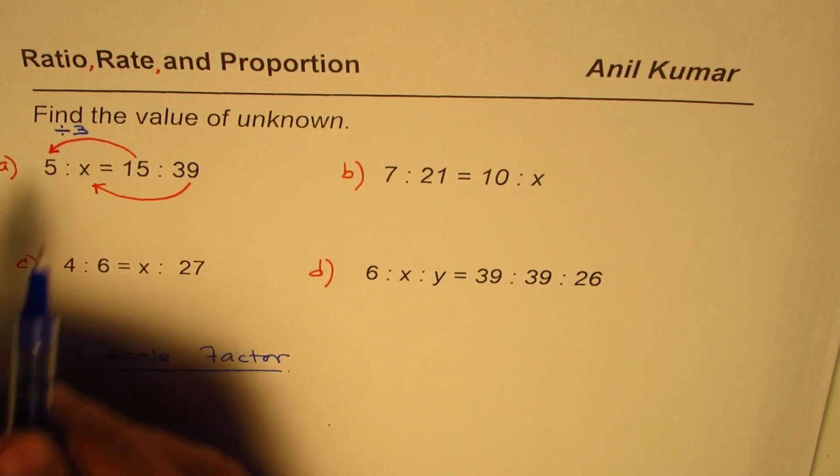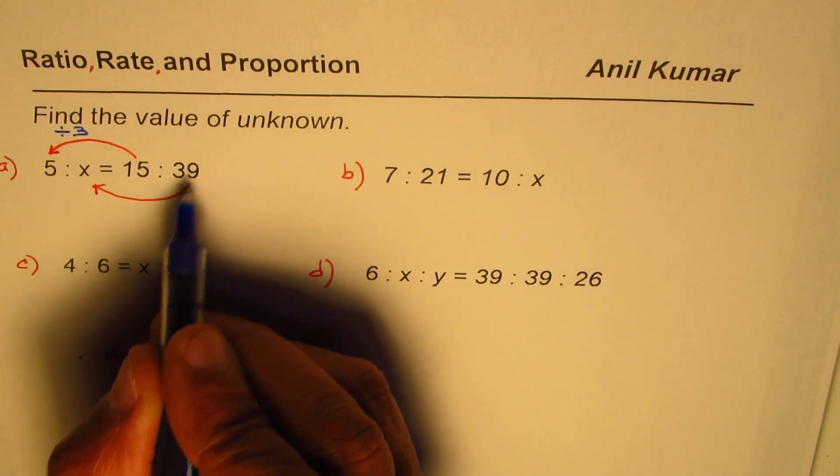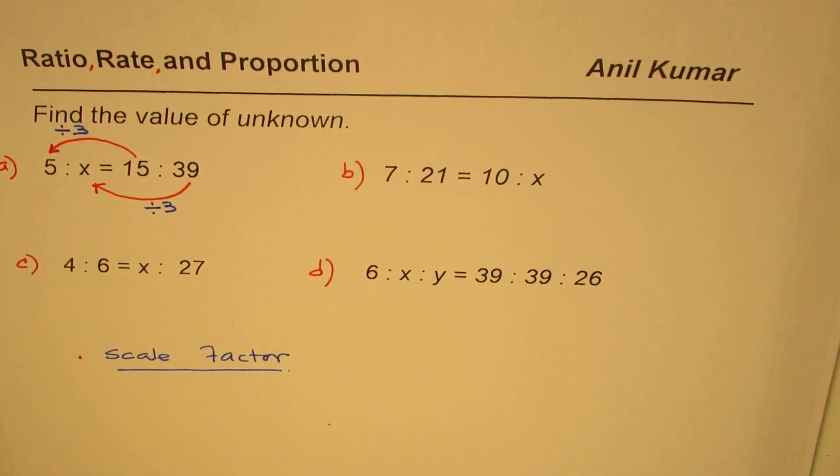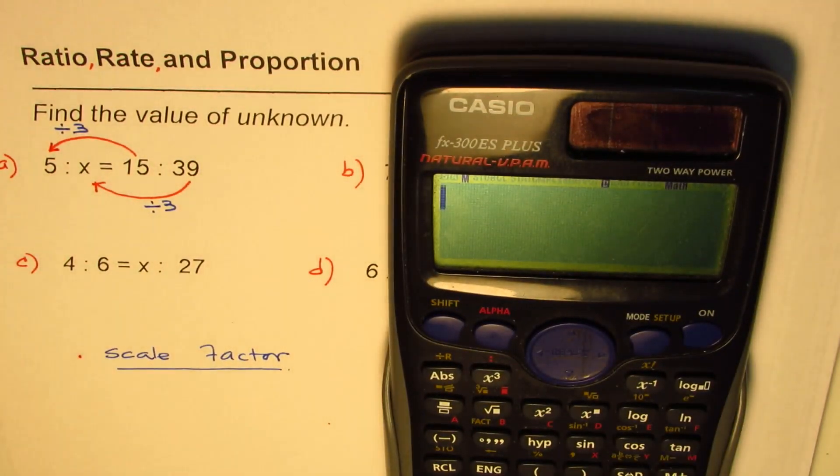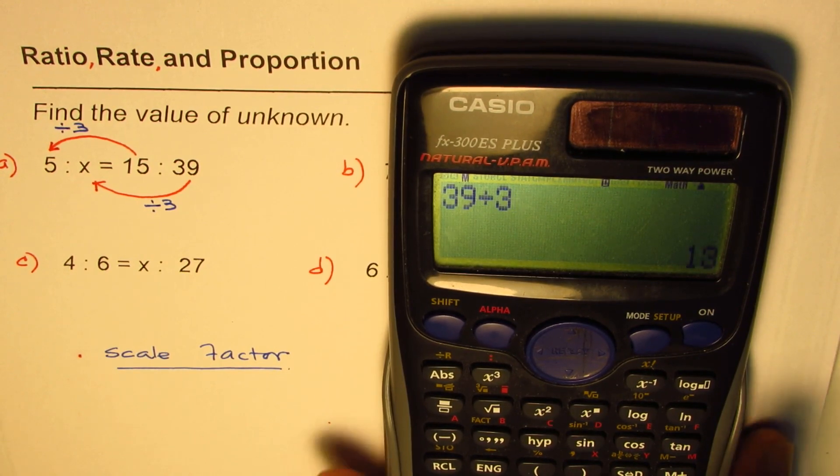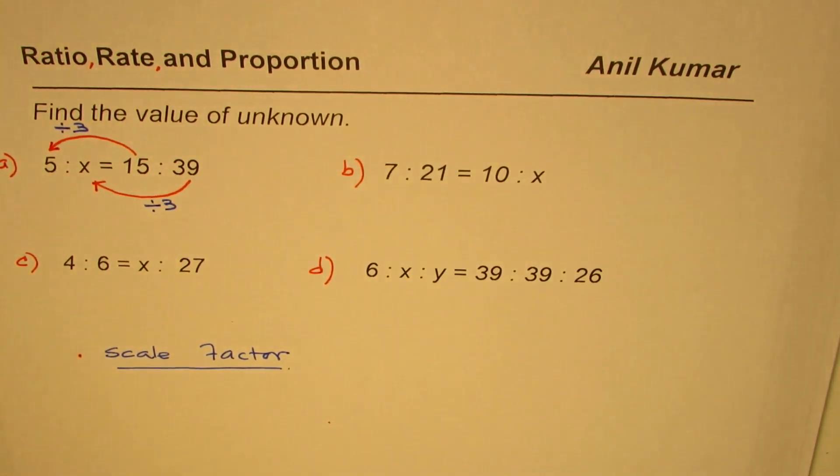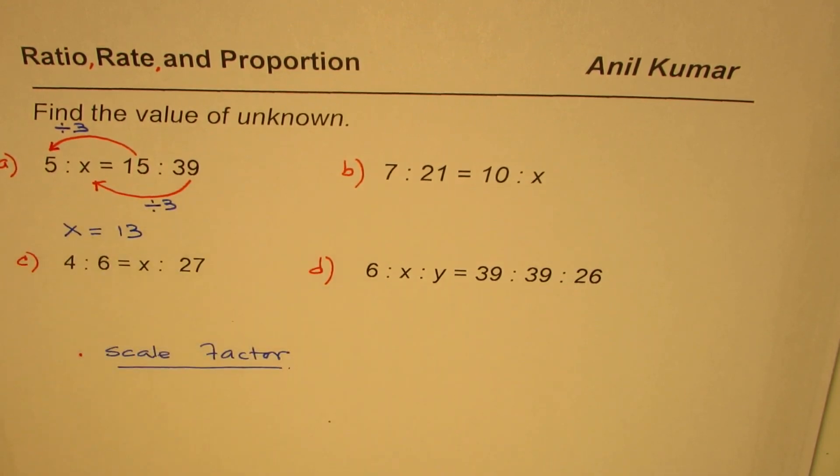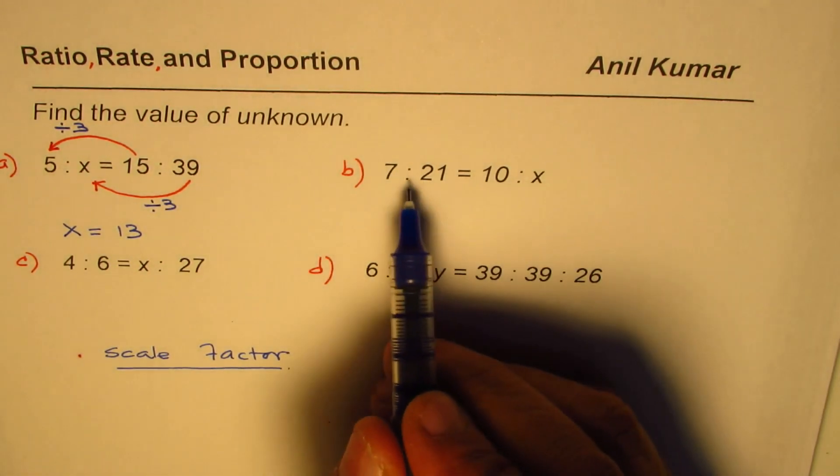So if you divide 15 by 3, you get 5. And therefore, if I divide 39 by 3, I'll get the value of x. So we can use the calculator. We'll say 39 divided by 3, that gives you the number 13. Therefore, we say x is equals to 13.